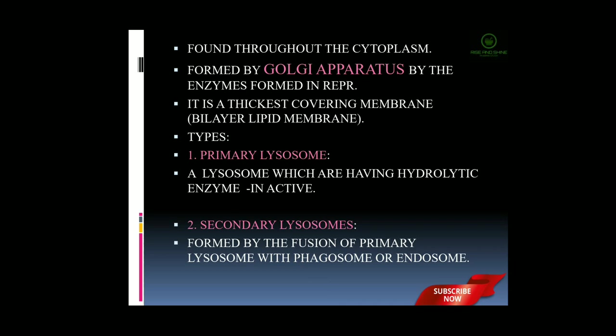The secondary lysosome is formed when a fusion reaction occurs between the primary lysosome and a phagosome or an endosome — this activating state converts the primary lysosome into the secondary lysosome. A phagosome is a vesicle formed around the particle engulfed by the phagocyte.